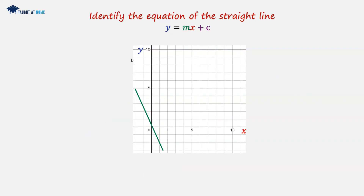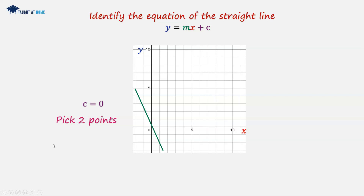Now for a final example. What we'll notice is we have a negative gradient — a straight line that passes through the origin with a negative gradient. Therefore c is going to equal 0, as it passes through the origin.